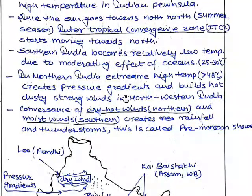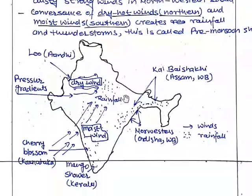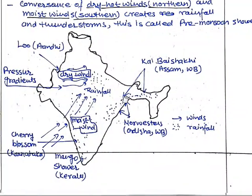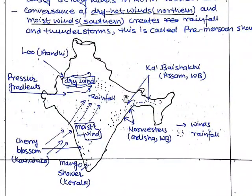This creates pressure gradients and builds hot, dusty, strong winds in northwestern India. The convergence of dry hot winds from the north and moist winds leads to rainfall. This occurs in Karnataka, on the horizon, and mango showers in Kerala.